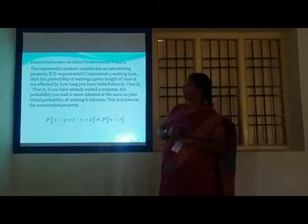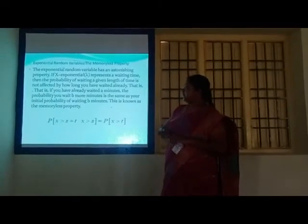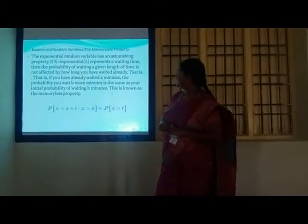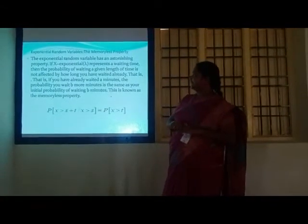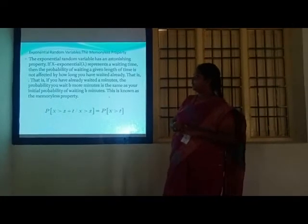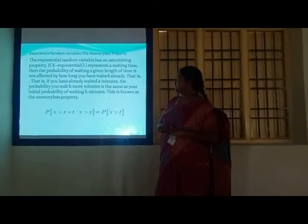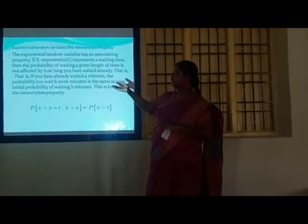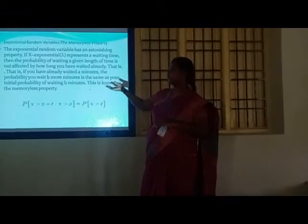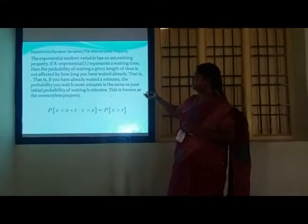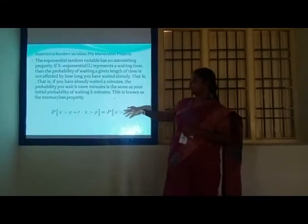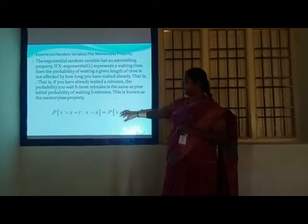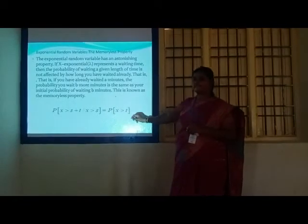Exponential random variables — the memoryless property. The exponential distribution represents waiting time where the probability of waiting an additional length of time does not depend on how long you have already waited. For example, if you have already waited s minutes, the probability of waiting 3 more minutes is the same as the initial probability of waiting 3 minutes. This is: P(X > s + t | X > s) = P(X > t).